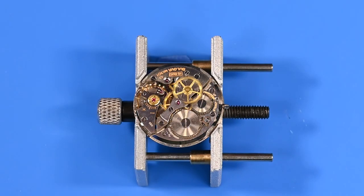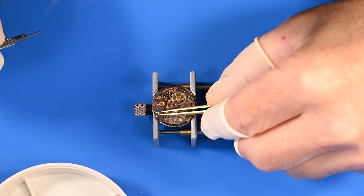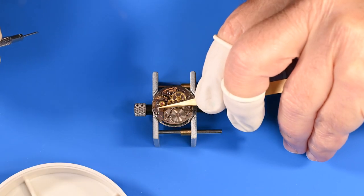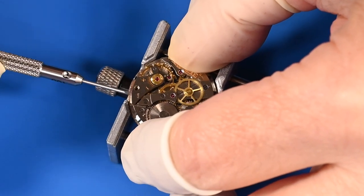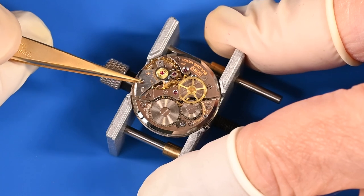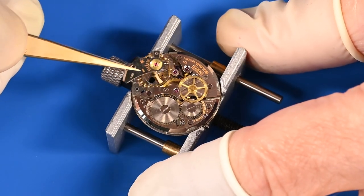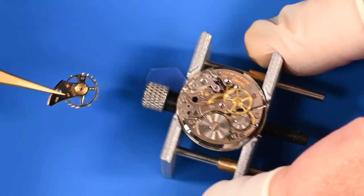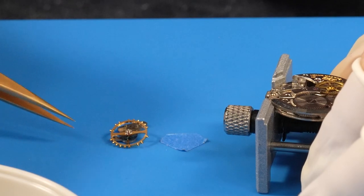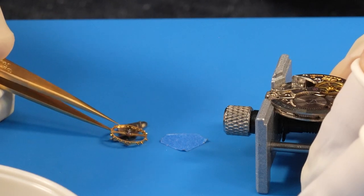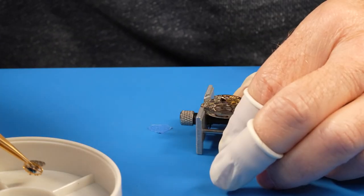I will remove the balance assembly first to protect the delicate hairspring before disassembling the motion works. I'll be completely disassembling, inspecting, and cleaning all of the parts before reassembling the movement and placing it back in its case. I'll also try to refinish the scratched crystal, polish the case, clean the dial and hands, and restore a different expansion bracelet that's more accurate to the original band.